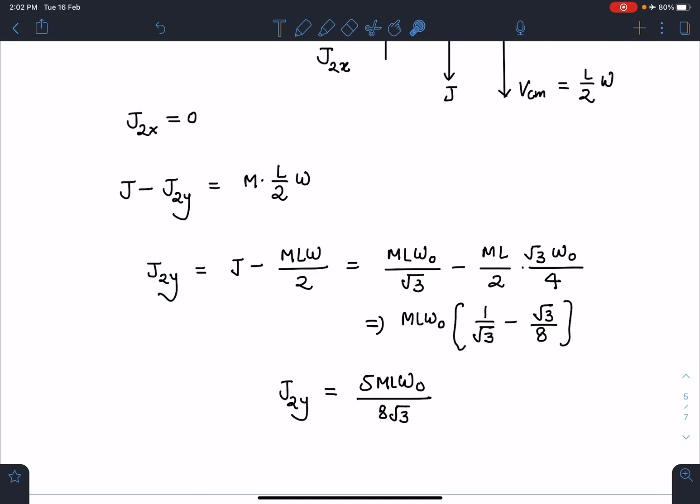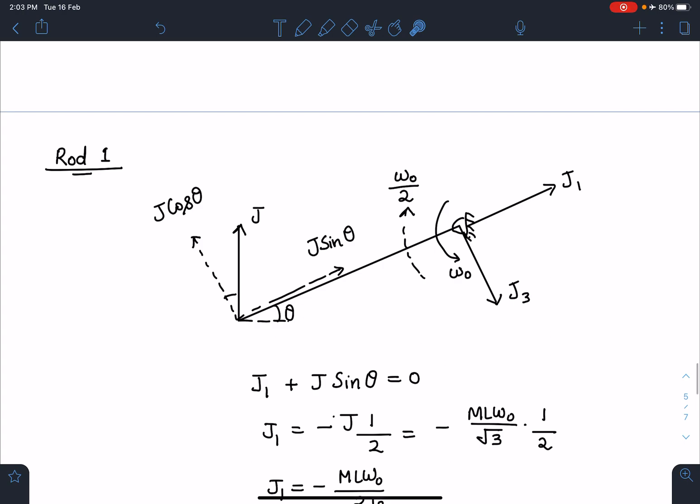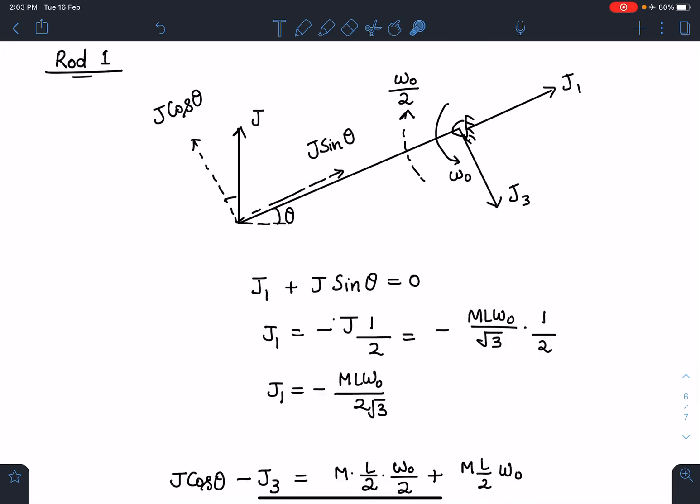Similarly for rod 1, like I have shown you earlier, this impulse is some J1 and this is J3. I can resolve this J into two components: perpendicular to rod and along the length of the rod. Along the length of the rod, total impulse is J plus J1 plus J sine theta, and that should equal change in linear momentum of center of mass in this direction. Luckily, center of mass doesn't have any velocity in horizontal direction, so J1 plus J sine theta should be zero. We are going to get this J1 value as minus ML omega naught by 2 root 3. This is coming in negative - negative sign indicates J is actually acting in opposite direction.